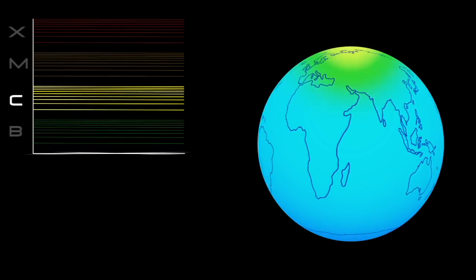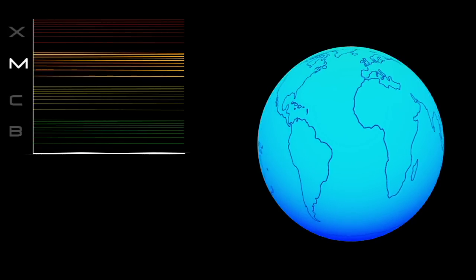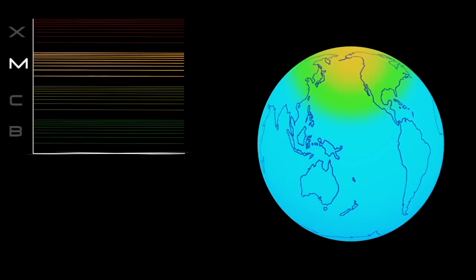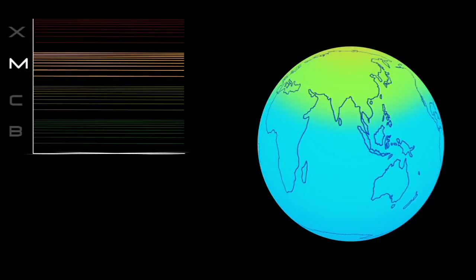C-class flares are too weak to noticeably affect Earth. M-class flares can cause brief radio blackouts at the poles and minor radiation storms that might endanger astronauts.